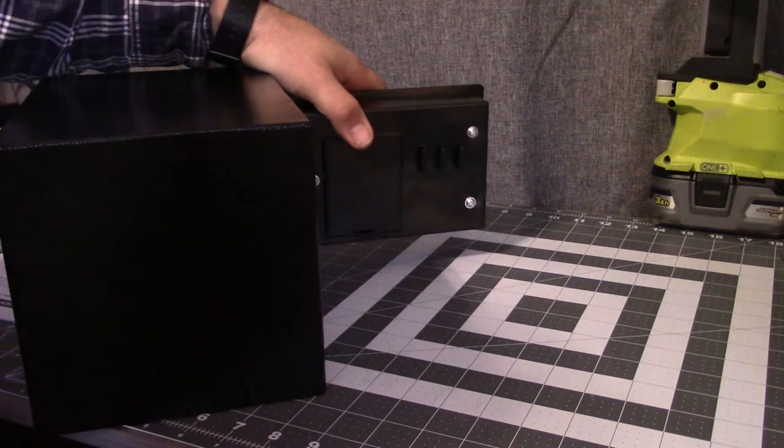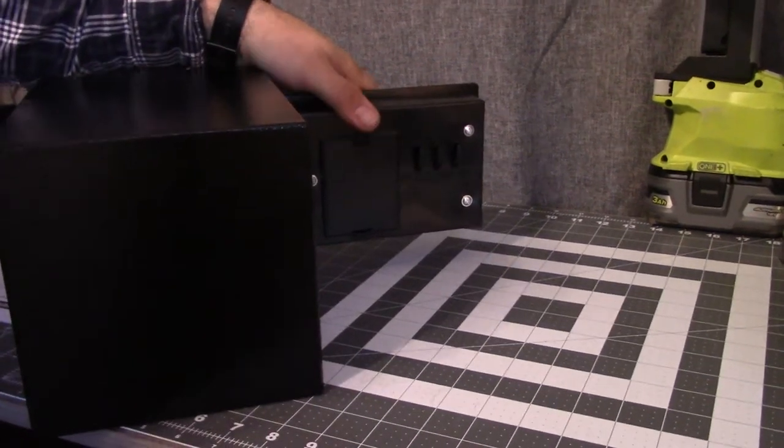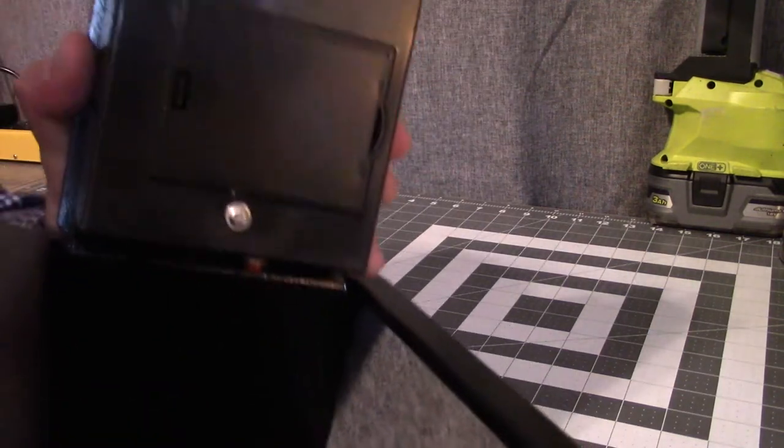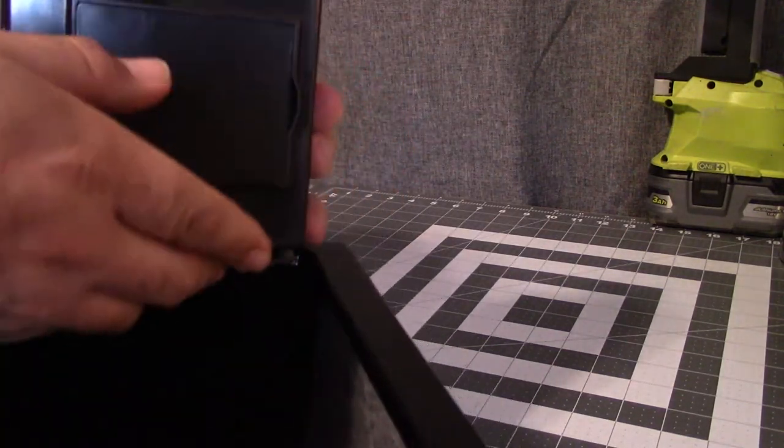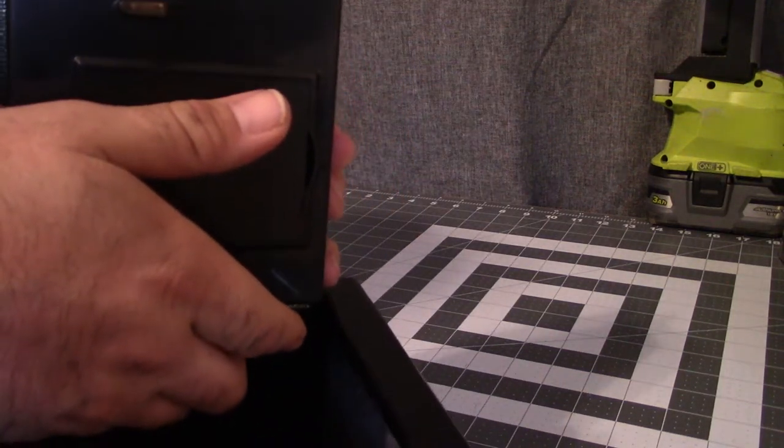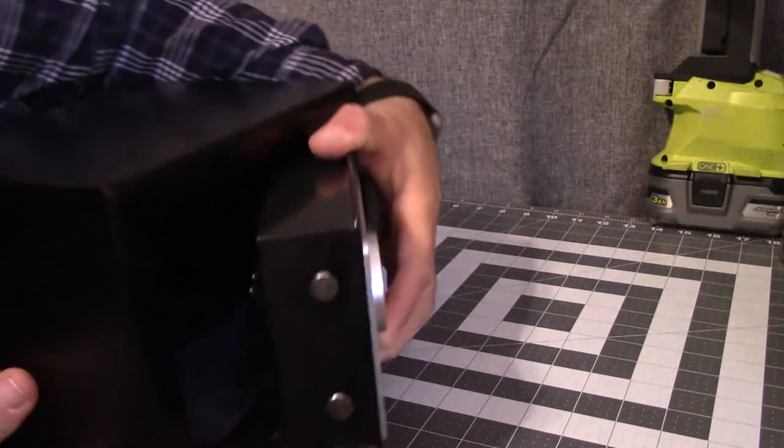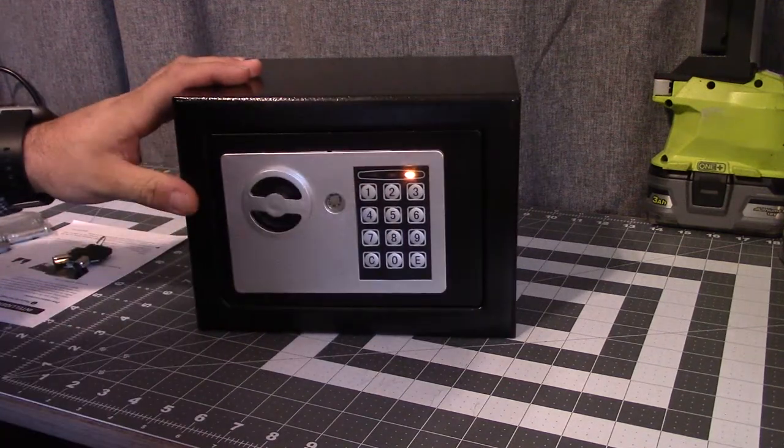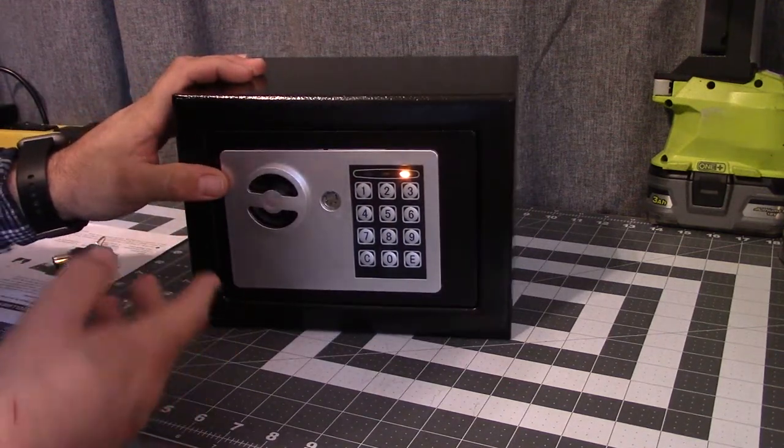Now it is kind of hard to see. However, right on the inside of the door here, let's see if you can see that. There is a little red button. We want to press that. Now on the front, the yellow light is going to blink. That is going to show you where it is at. We want to change our code.